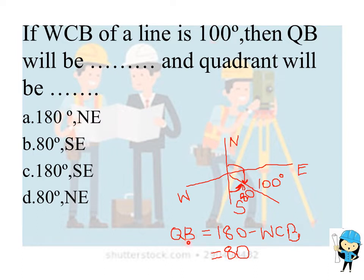Then the formula used is: the quadratic bearing equals 180 degrees minus the whole circle bearing, that is 180 degrees minus 100 degrees, which equals 80 degrees.